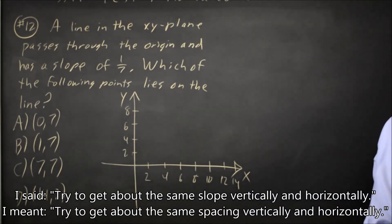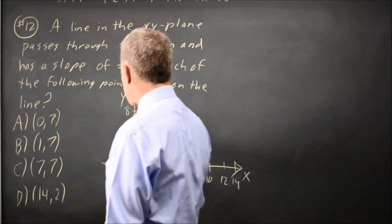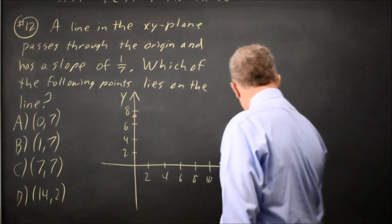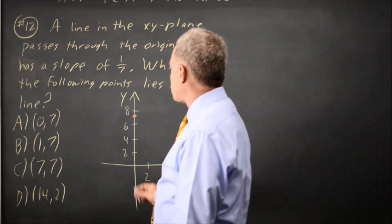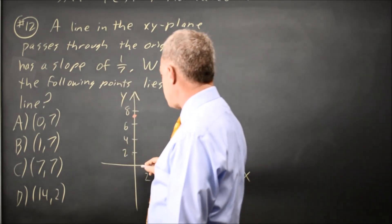Let's take a look at choice A. The x coordinate is 0, the y coordinate is 7. The line through the origin and choice A has infinite slope, which is not 1 seventh, and it's certainly not a shallow positive slope, even if we don't find the exact slope.